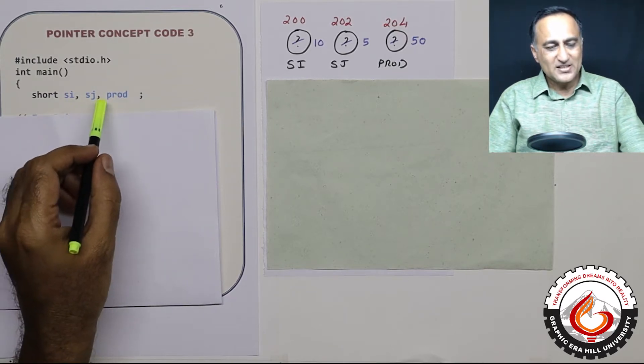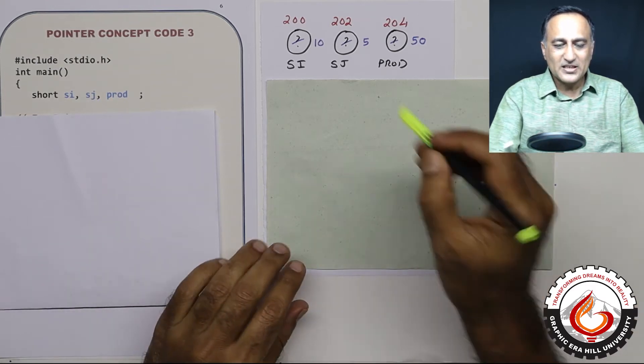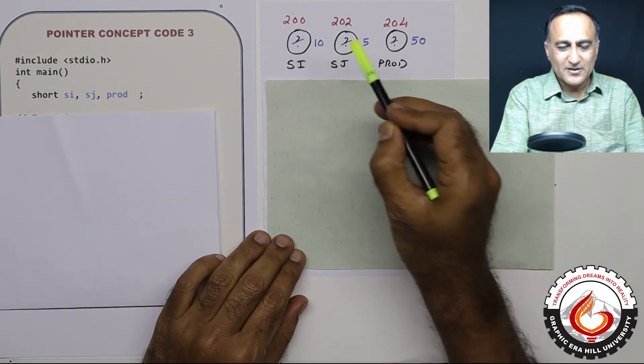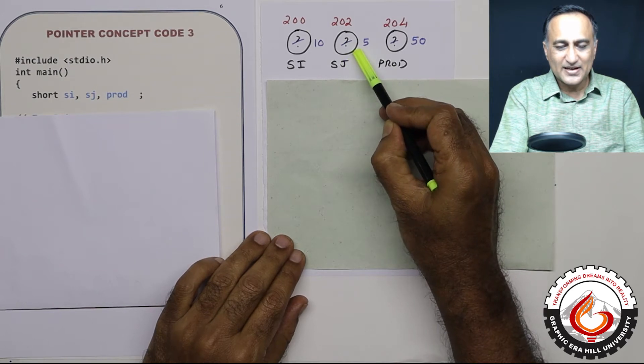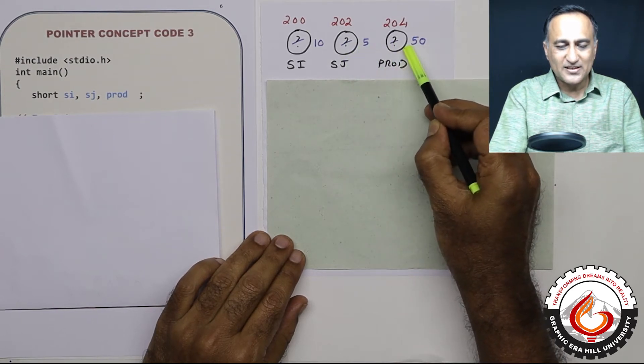So si, sj, and prod, let us represent them like this. Si is represented in the first circle, sj is represented in the second circle, prod is represented in the third circle.